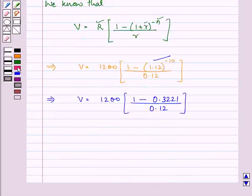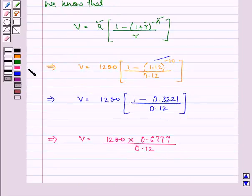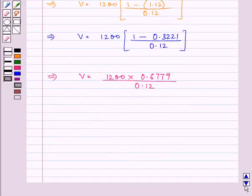Further solving it we have V is equal to 1200 into their difference, that is 0.6779, divided by 0.12, which after calculation comes out to be Rs. 6779.